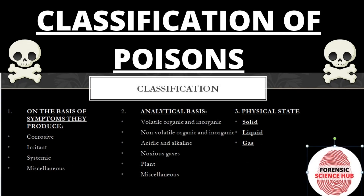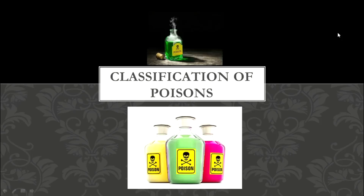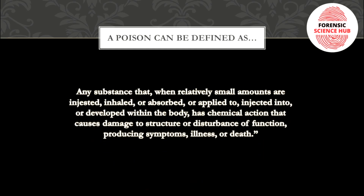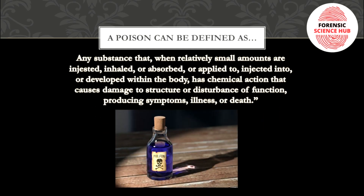Hello everyone, welcome back to my channel. In today's video I'm going to discuss the classification of poisons. Before that, let's understand what a poison is. A poison can be defined as any substance that when relatively small amounts are ingested, inhaled, absorbed, applied, injected, or developed within the body, has a chemical reaction that causes damage to structure or disturbance of function, producing symptoms, illness, or death.